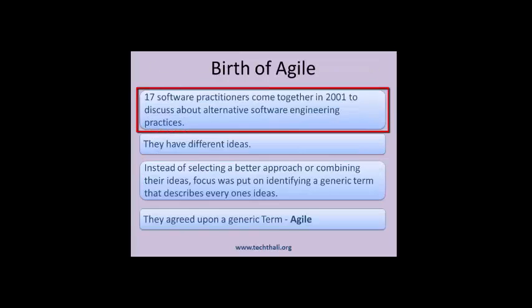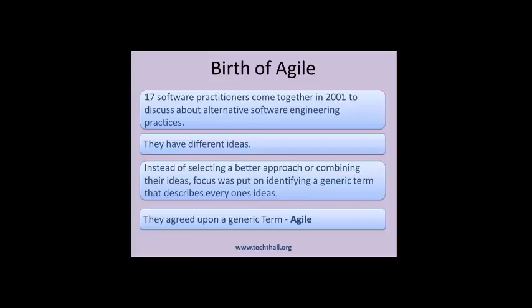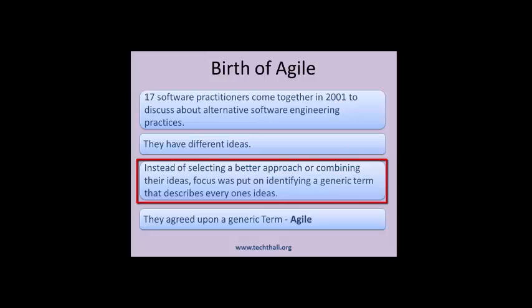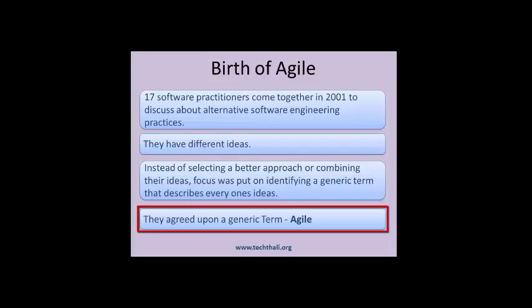In 2001, 17 software practitioners met together to discuss lightweight software development methodologies. Most of the participants had tried out different processes successfully. As each process has its own advantages, they decided to focus on identifying a generic term that describes everyone's ideas. They decided neither to combine their ideas nor select a best idea to make it the standard. They agreed to use the term Agile to describe the new software engineering process.